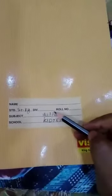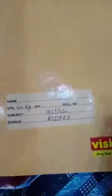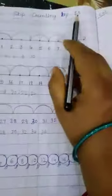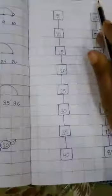And this is your maths notebook. Take out your maths notebook and pencil. In last class we have learnt skip counting by twos and skip counting by five.